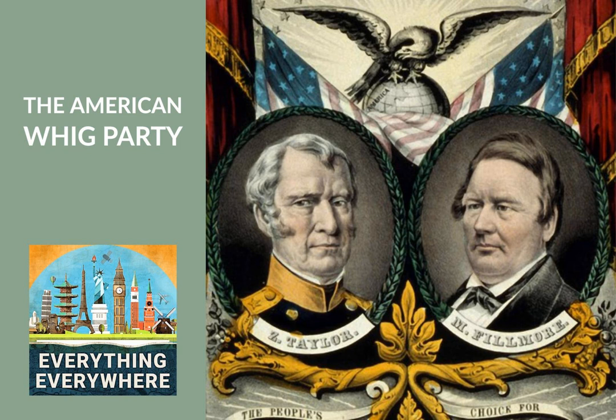Tyler wasn't much of a Whig as president. He appointed Democrats to his cabinet, and he wasn't very popular. The Whig Party dropped him as their candidate in 1844. Instead, they ran Henry Clay from Kentucky, who lost to James Polk. Polk promised to only serve one term, and he did just that. The Whigs then ran General Zachary Taylor, who had just come off success in the Mexican-American War. Taylor won the presidency in 1848, becoming the second Whig to win the White House.